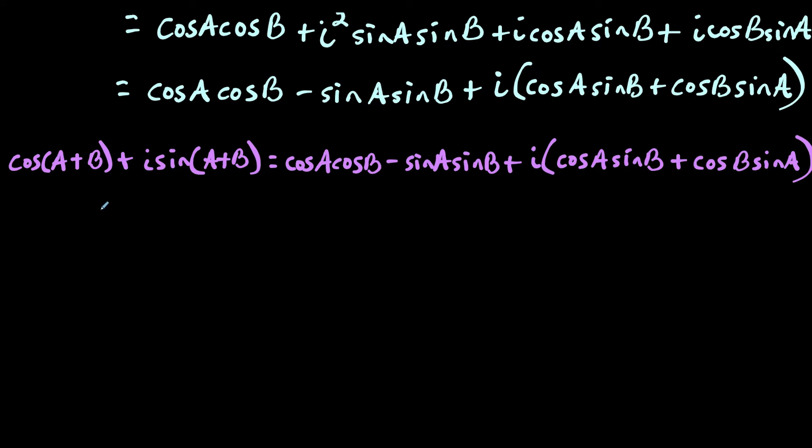So now for the last bit of analysis, anytime you have a complex number where you have a real part and an imaginary part, the only way that it's going to be equal to another complex number is if the real parts are equal and if the imaginary parts are equal. So the first thing I would notice here is that the real part of the left side is cosine of a plus b, and that's going to be equal to the real part of the right side, which is cosine a cosine b minus sine a times sine b.